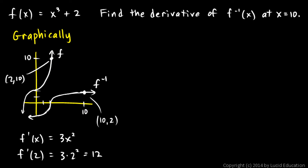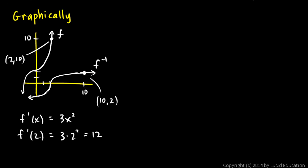So if the slope of f right here is 12, then f inverse down here at the corresponding point has a slope of 1/12. So that's our answer.